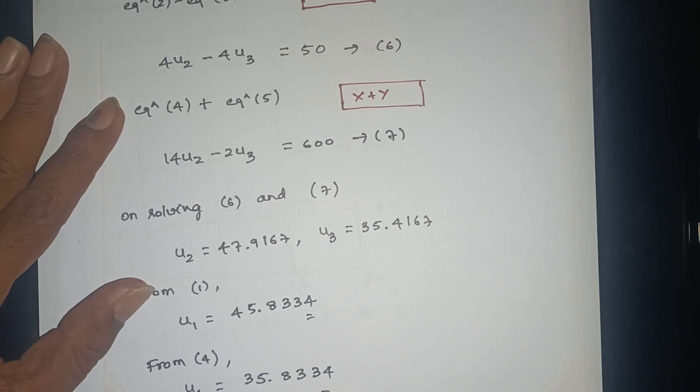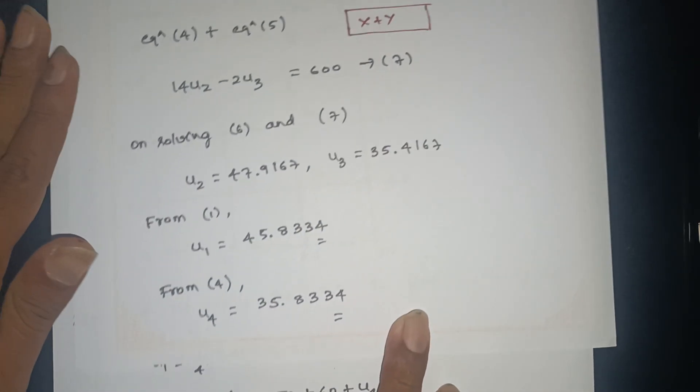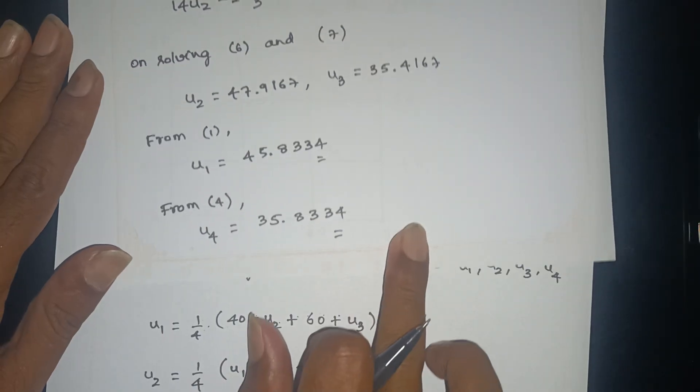So u4 is equal to 35.8334. The full result: u1, u2=47.9167, u3=35.4167, u4=35.8334. That's all. Thank you.